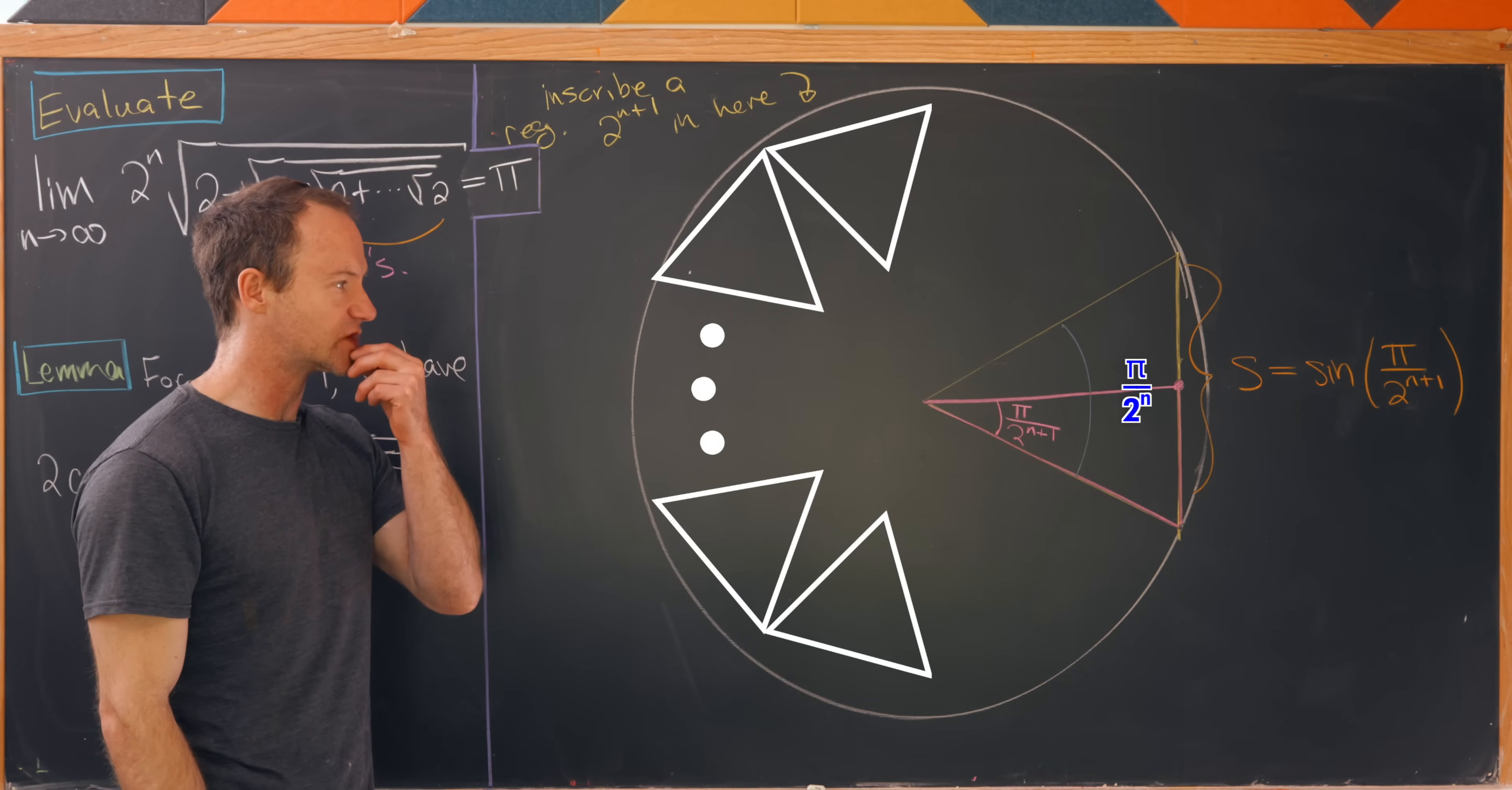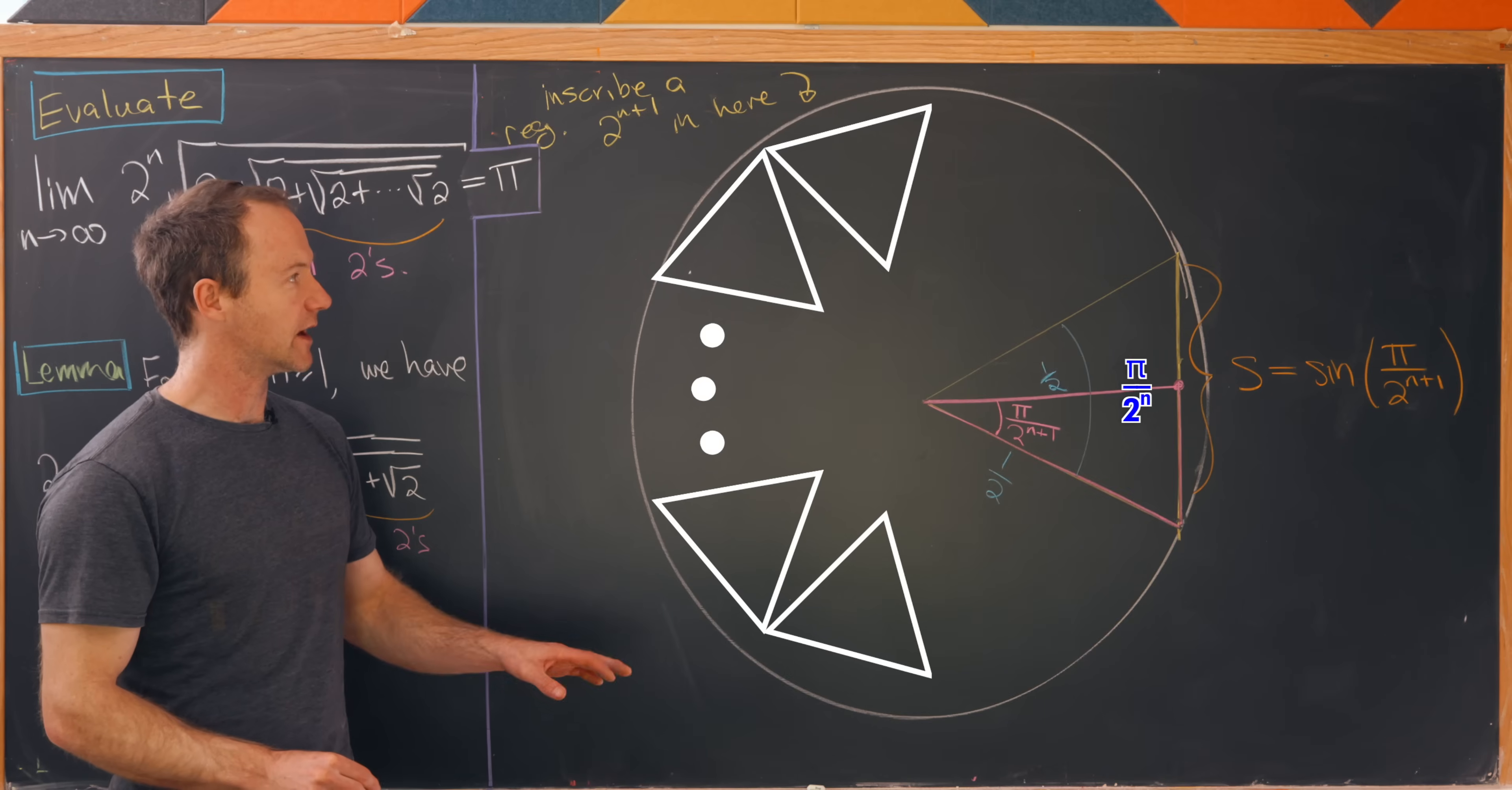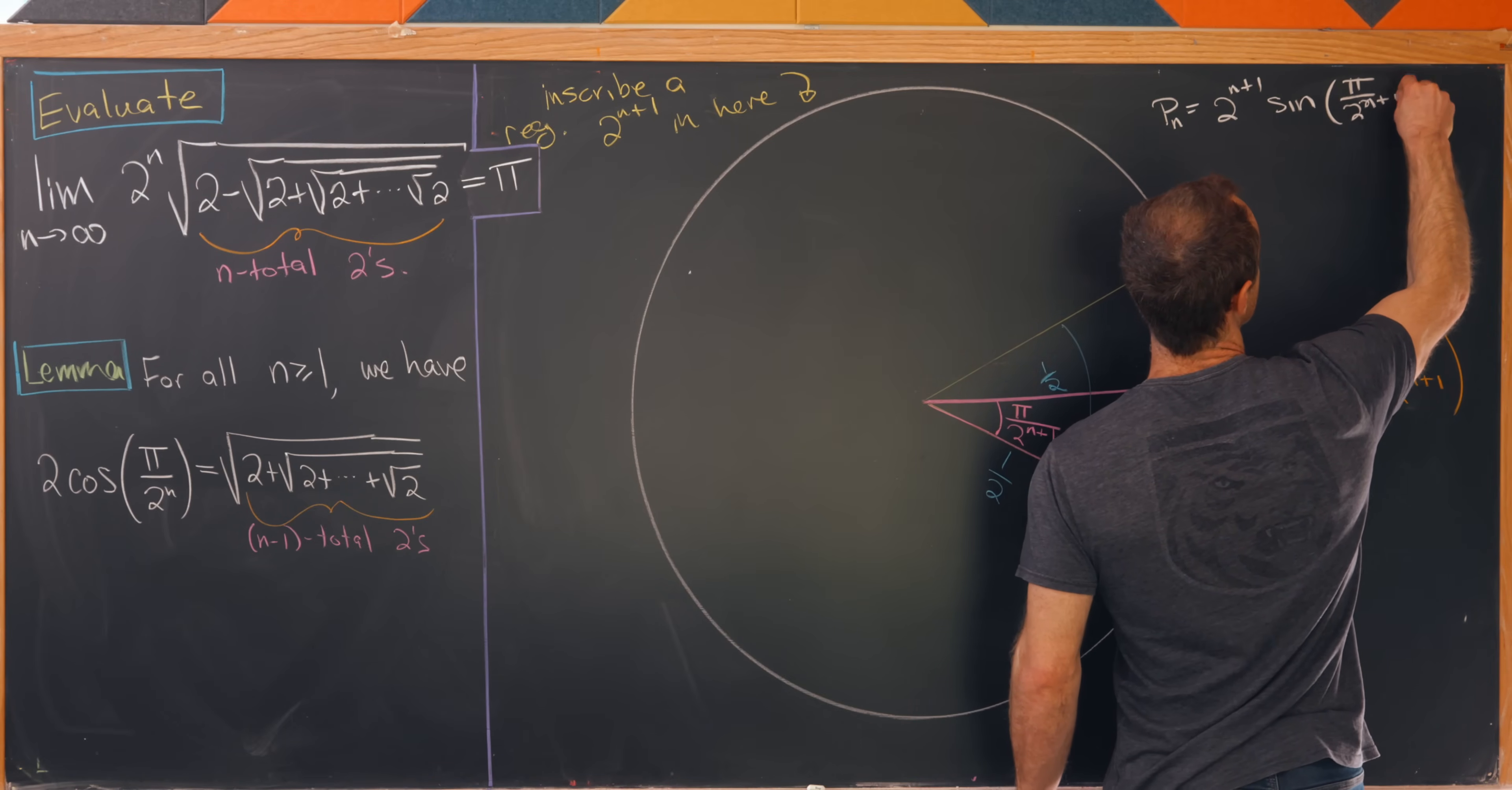Then we can do some very simple trigonometry to find the length of this segment right here. This segment is one of the edges of our 2 to the n plus 1 gon. We do that using the fact that this is a circle with a radius of one half and thus a diameter of 1. But that means that the side length here can be calculated to be sine of pi over 2 to the n plus 1. So we've got a 2 to the n plus 1 gon that has that as its side length. So that means our total perimeter is 2 to the n plus 1 times sine of pi over 2 to the n plus 1.